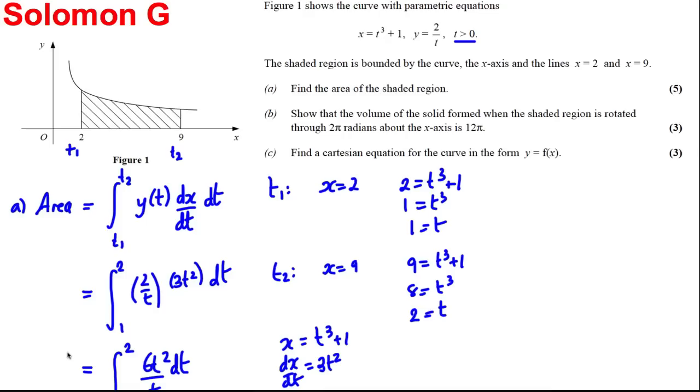Okay, so we have found this here. Let's just, before I rub it out, t is equal to 1 here and t is equal to 2 here. And we have found that that area is 9 units squared.